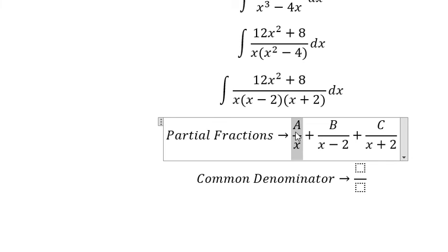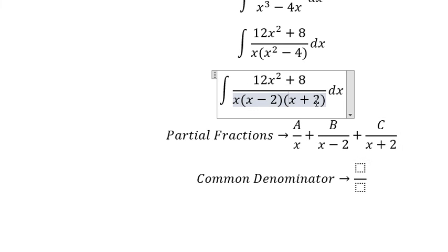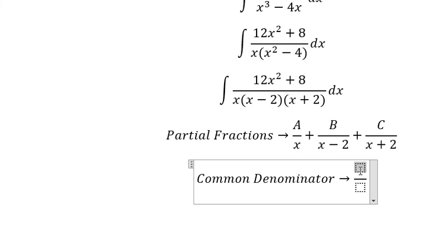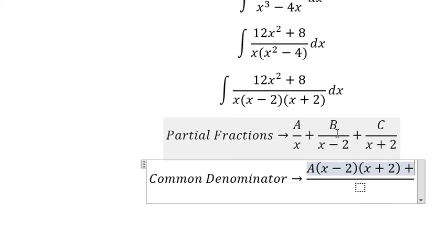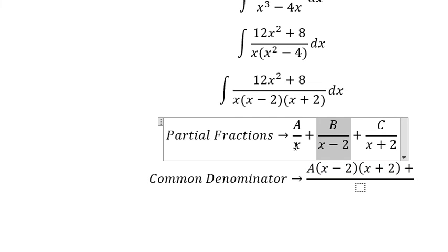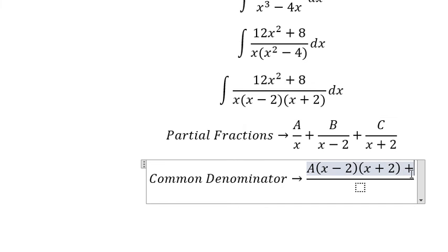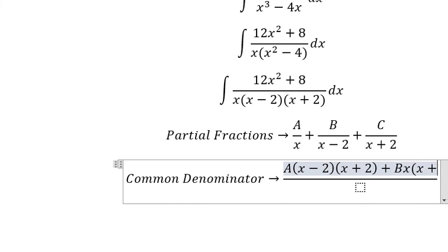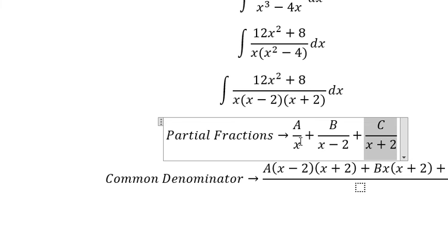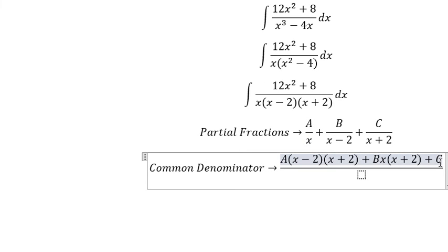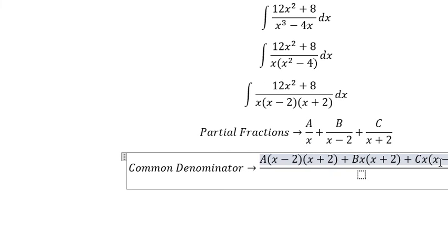For A, it is missing x minus 2 and x plus 2, so A(x minus 2)(x plus 2). For B, it is missing x and x plus 2, so Bx(x plus 2). For C, it is missing x and x minus 2, so C times x(x minus 2).